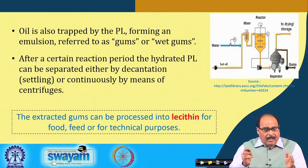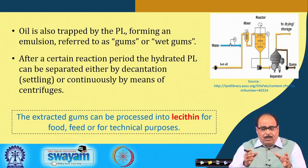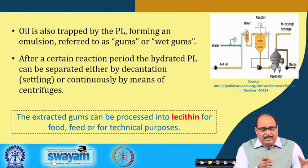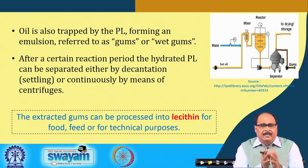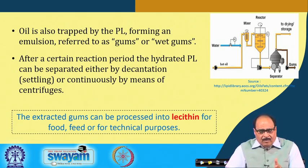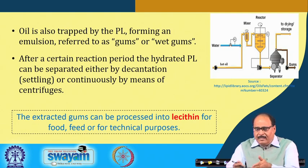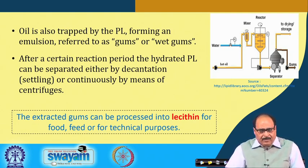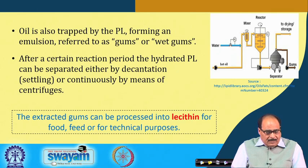The oil trapped by the phospholipids forms an emulsion known as gums or wet gums. After the reaction period, the hydratable phospholipids are separated by decantation or centrifugation.